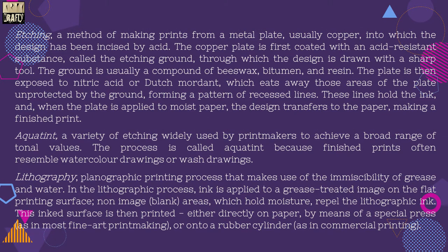Etching is a method of making prints from a metal plate, usually copper, into which the design has been incised by acid. The copper plate is first coated with an acid-resistant substance called the etching ground, through which the design is drawn with a sharp tool. The ground is usually a compound of beeswax, bitumen and resin. The plate is then exposed to nitric acid or Dutch mordant, which eats away those areas of the plate unprotected by the ground, forming a pattern of recessed lines. These lines hold the ink and when the plate is applied to moist paper, the design transfers to the paper, making a finished print.